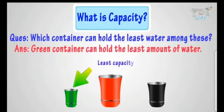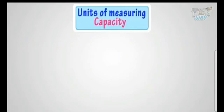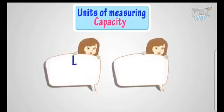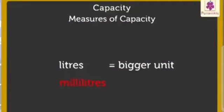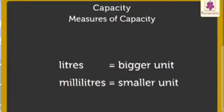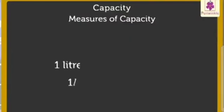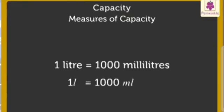Now we are moving forward. You know about capacity, so let's learn the different units for measuring capacity. Here I have the different units of capacity. The first one is a litre and the smallest one is millilitre. L stands for litre and ML stands for millilitre. Litre is our bigger unit and millilitre is the smaller unit. 1 litre is equal to 1000 millilitres.